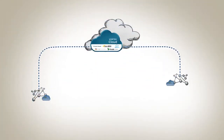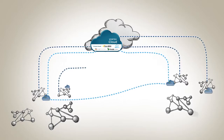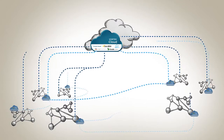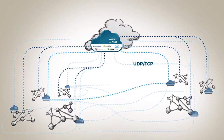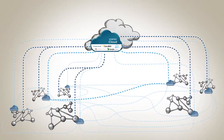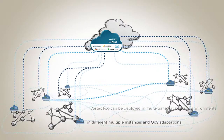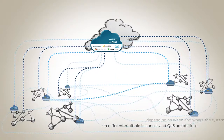Vortex Fog is typically deployed on the edge, in a multi-protocol environment. Usually you will have multicast inside your subsystem and some form of unicast — UDP or TCP — to communicate with the rest of the world. The deployment with respect to how many instances, the elasticity, and the QoS adaptation properties are different because of the way you deploy the two different technologies.